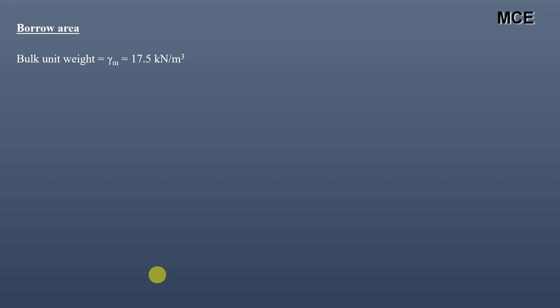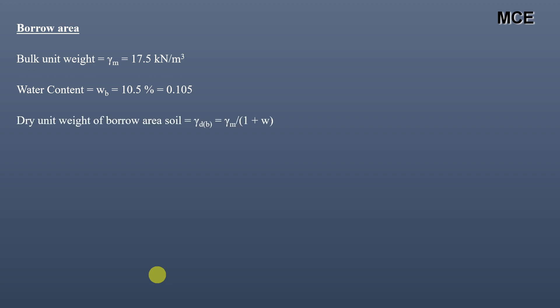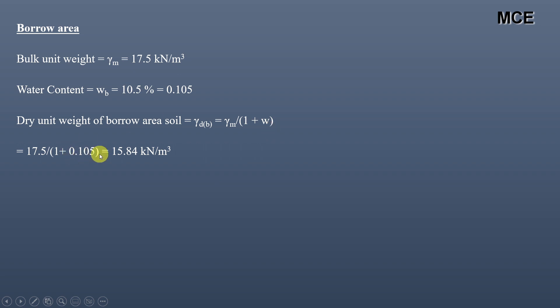For the borrow pit soil, the bulk unit weight is 17.5 kN/m³ and water content is 10.5%. The dry unit weight of the borrow pit soil equals bulk unit weight divided by (1 + water content): 17.5 ÷ (1 + 0.105) = 15.84 kN/m³. This is the dry unit weight of the borrow area soil.